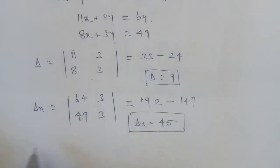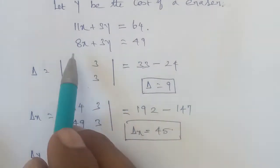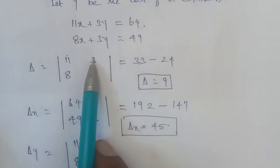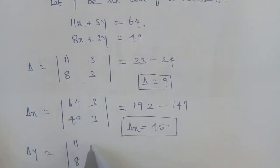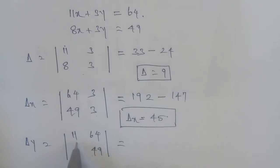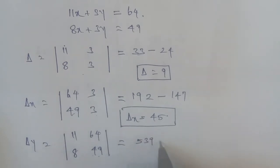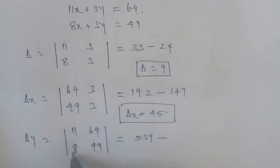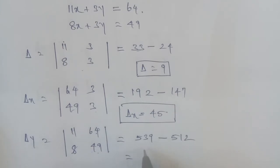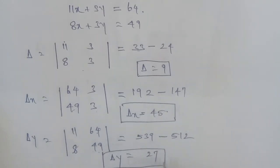Now delta y: replace column 2 with the constants 64 and 49, keeping column 1 as 11 and 8. Applying the determinant: 11 into 49 is 539, minus 64 into 8 is 512. So 539 minus 512 gives delta y equal to 27.